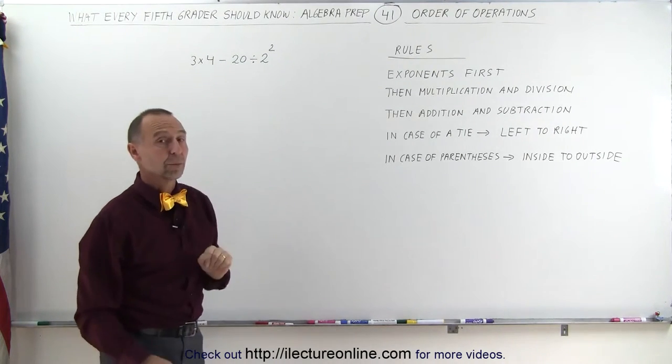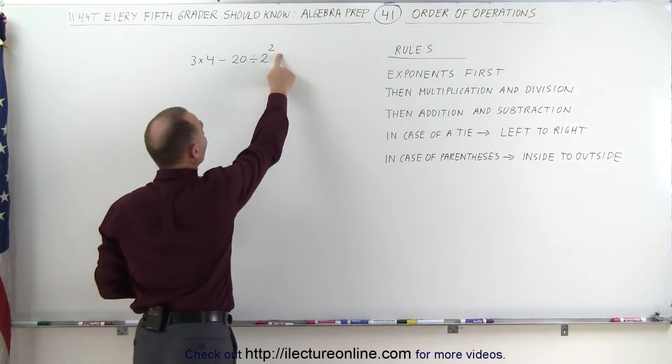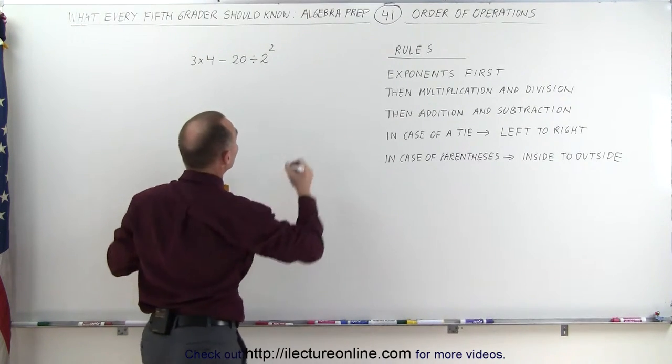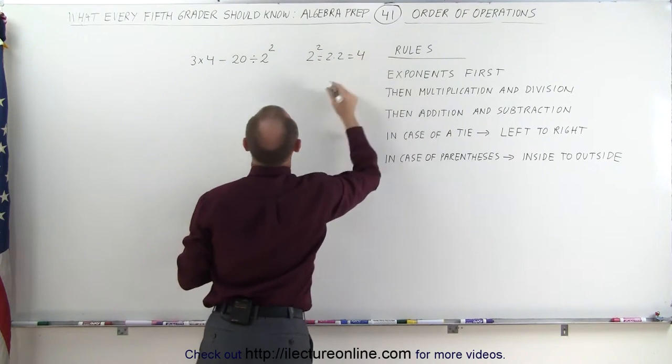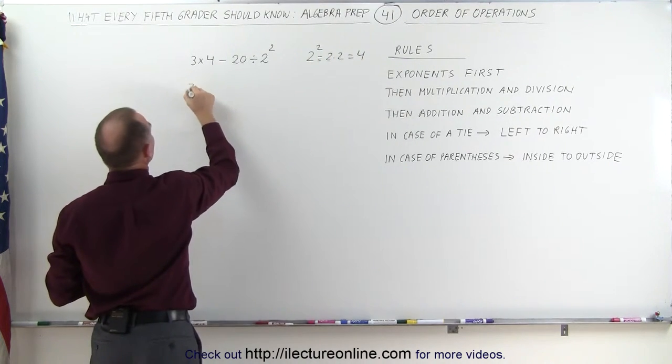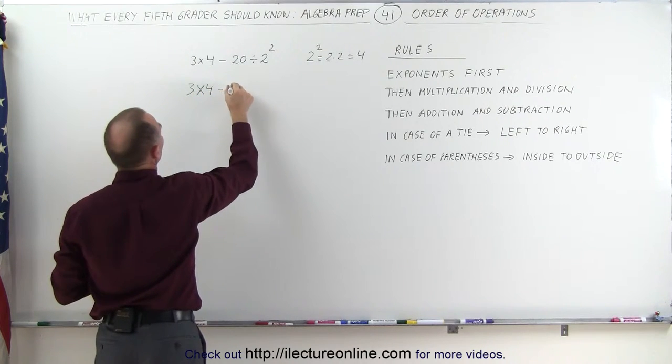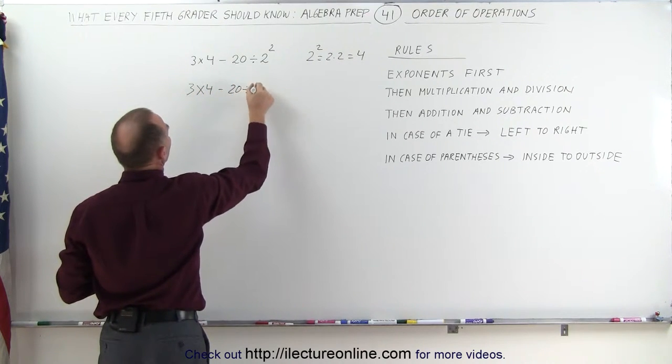Well, we want to do the exponents first, and 2 to the second power is equal to 4, because 2 to the second power, that's equal to 2 times 2, which is equal to 4. So this problem now becomes 3 times 4 minus 20 divided by 4.